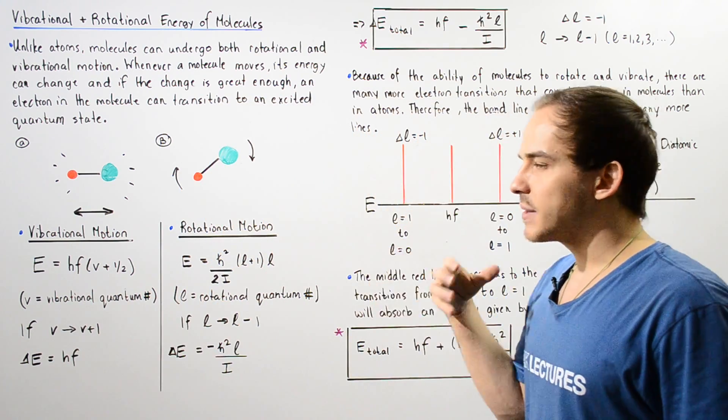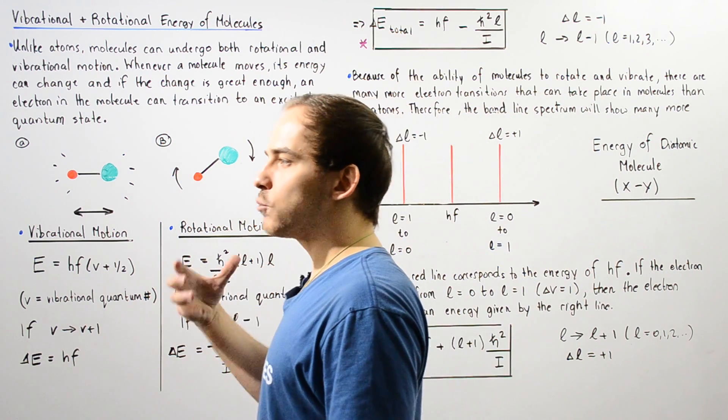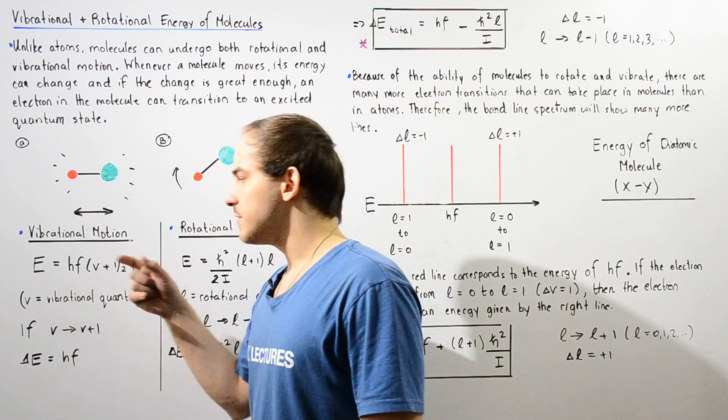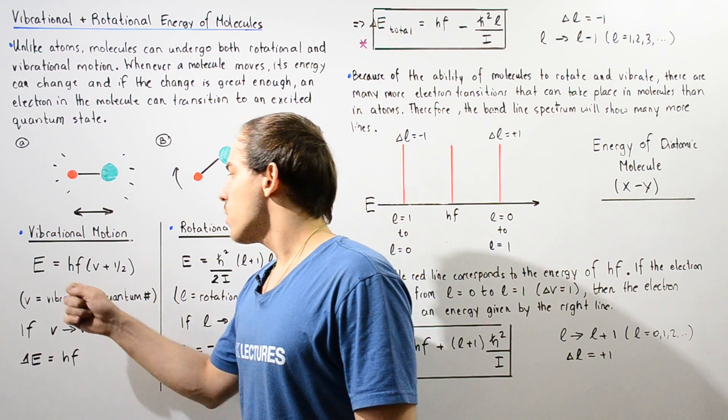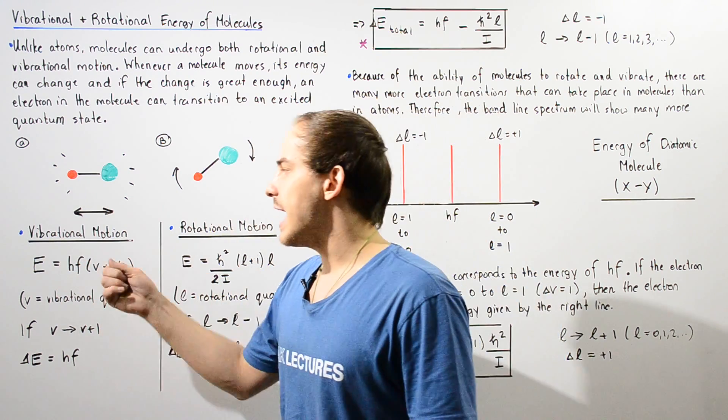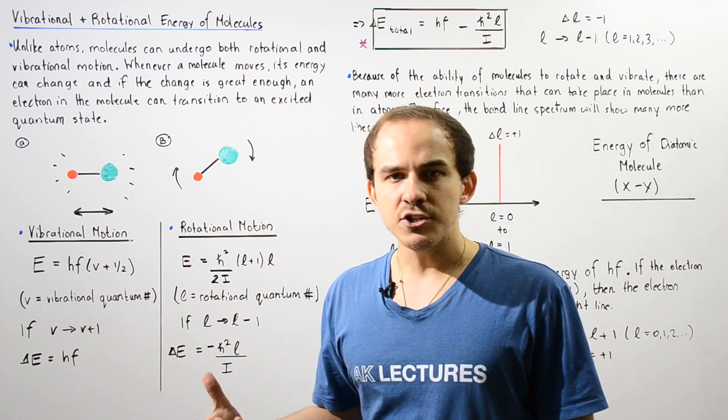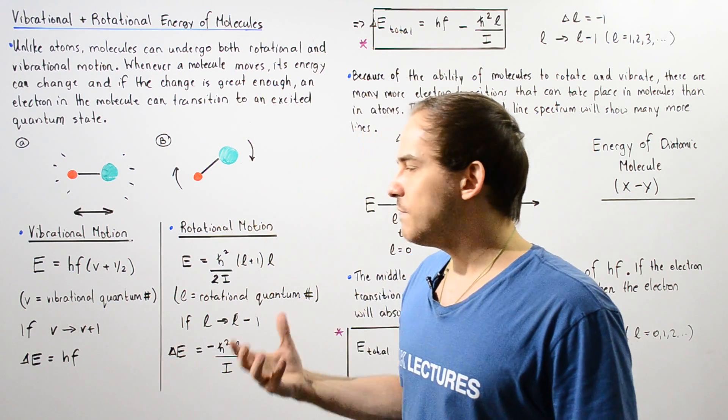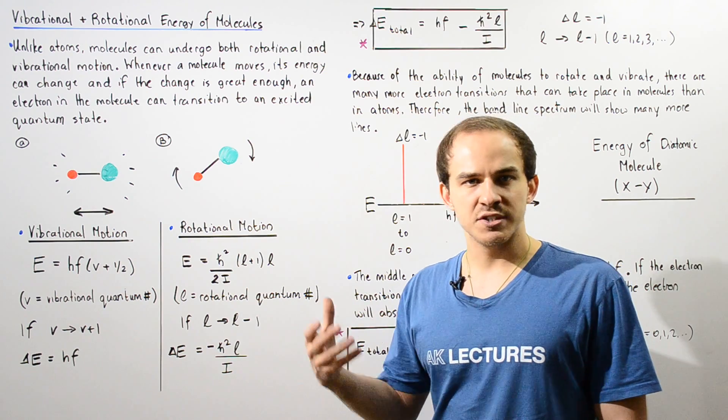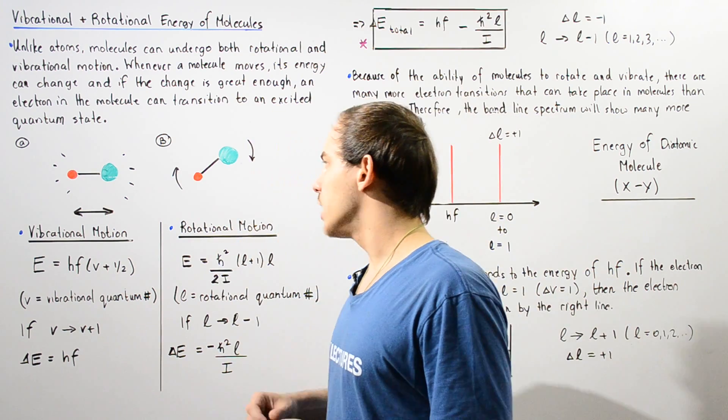Now in this particular case, our diatomic molecule has a vibrational energy E that is given by this equation, where H is Planck's constant, F is the frequency of oscillation, and V is the vibrational quantum number. So V can be a value that begins with zero and increases by increment of one.